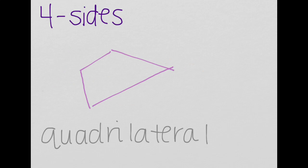Now, when a polygon has four sides, it's called a quadrilateral. So one, two, three, four quadrilateral.